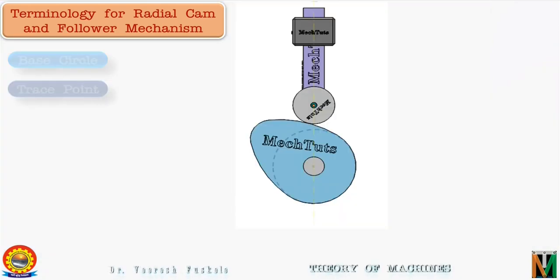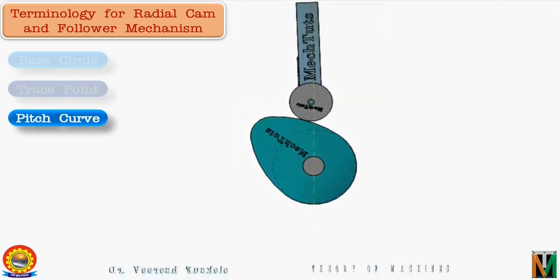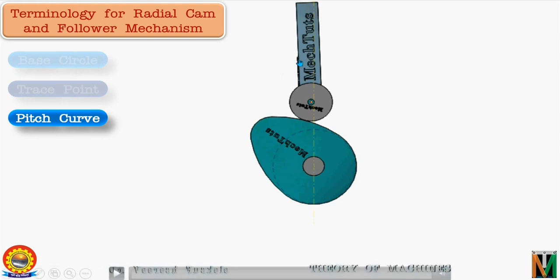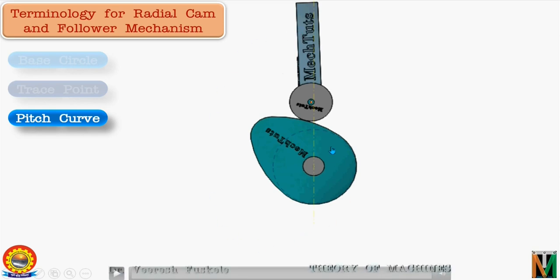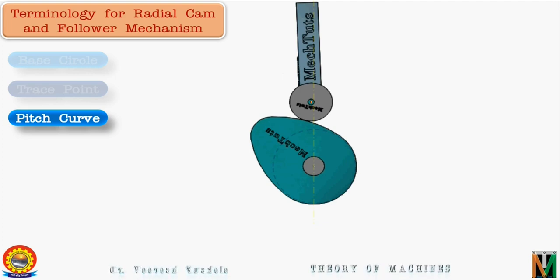The next important term is pitch curve. To define the pitch curve we think of a kinematic inversion. This is a four-link mechanism in which link 1 is fixed, link 2 is the cam, link 3 is the roller, and link 4 is the follower. If we make an inversion in which link 2 (the cam) is fixed and allow the prismatic pair of the guide and follower to move in the opposite direction, the roller along with the follower rotates about the fixed cam. The locus of the center of the roller then generates a curve parallel to the cam profile, known as the pitch curve.